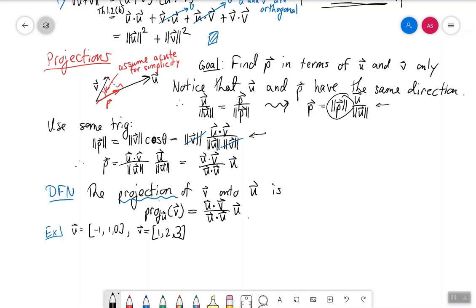We want to compute the projection of v onto u. The projection of v onto u using the formula that we just gave over here, the definition here, is going to be u dotted with v over u dotted with u times u, which is minus 1 plus 2 plus 0 divided by 1 plus 1 plus 0 times minus 1, 1, 0.